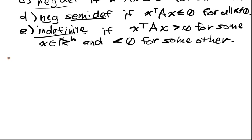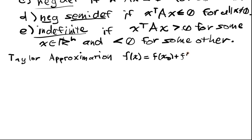These are global properties, but remember that we can do Taylor expansions of a one-dimensional function. We have that f of x is equal to f of x_0 plus f prime of x_0 times x minus x_0.